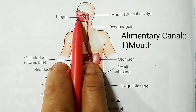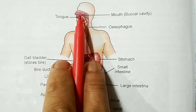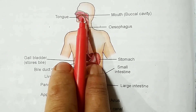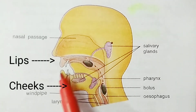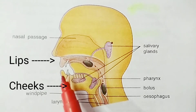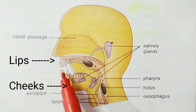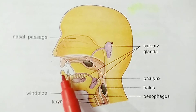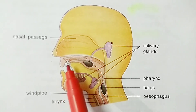The mouth is the first part of the alimentary canal. It opens into a large buccal cavity and its main function is to receive food and start mechanical digestion. The mouth contains the following parts. The first part is the lips and the cheeks. The cheeks and lips are highly sensitive and help in detecting the degree of hotness or coldness and the texture of the food.